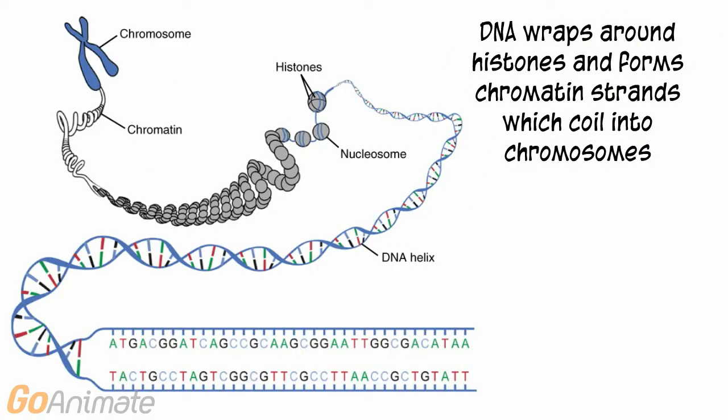DNA wraps around proteins called histones and forms chromatin strands that coil up to form chromosomes. The human has 46 chromosomes.